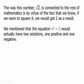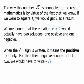The equation x squared equals 2 would actually have two solutions: one positive and one negative. When the radical sign is written, it means the positive root only. The other negative square root of 2 we would have to write with a negative sign in front of the radical — negative radical 2, or negative square root of 2. That would be the second root, the second answer, to the left of 0.